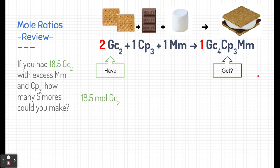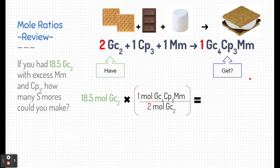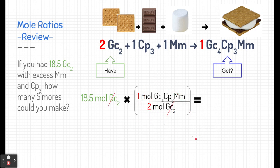This is a classical stoichiometry conversion process. So let's start with what we have: 18.5 moles of graham cracker. Remember, moles just represent quantities. If we take that 18.5 moles of graham cracker squares and multiply it by a conversion factor, our conversion factor here is the mole ratio — two graham cracker squares to one s'more. Notice we put moles of graham cracker squares on the bottom so we can cancel out graham crackers in this algebraic problem.